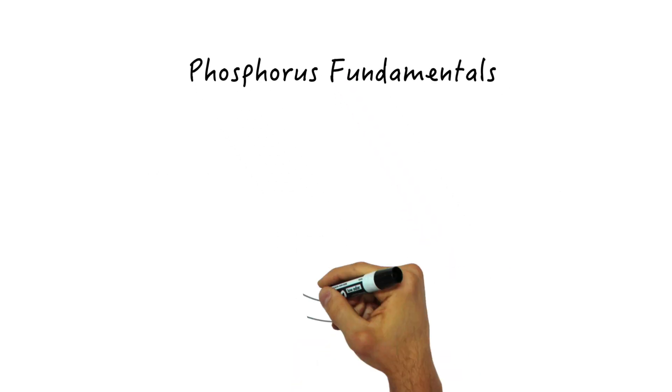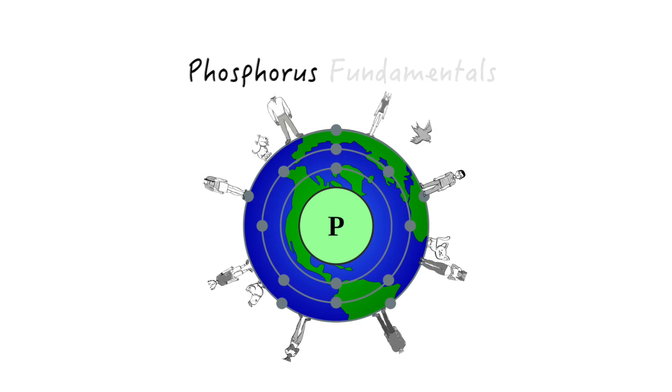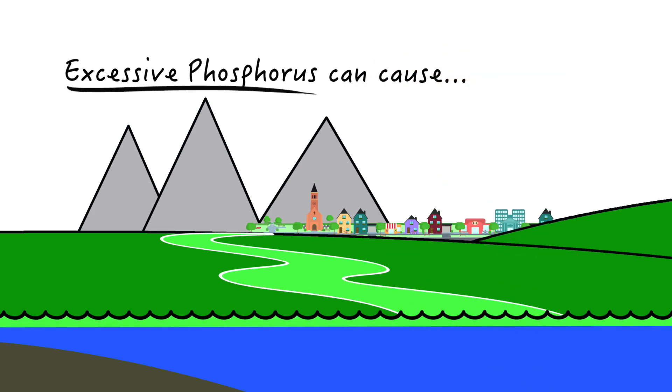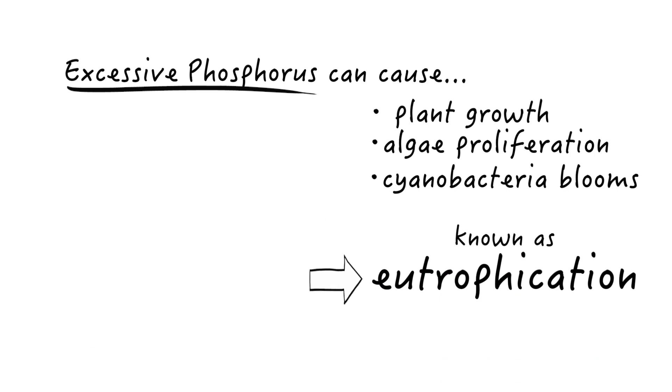Let's dig into some quick phosphorus fundamentals. Phosphorus is an abundant, naturally occurring element essential to all life on Earth. Excess phosphorus in waterways and water bodies can cause environmental complications such as dense plant, algae, and cyanobacteria growth known as eutrophication.